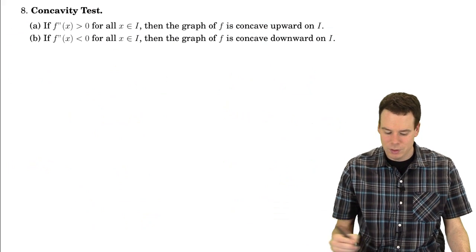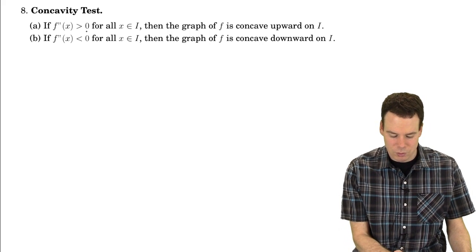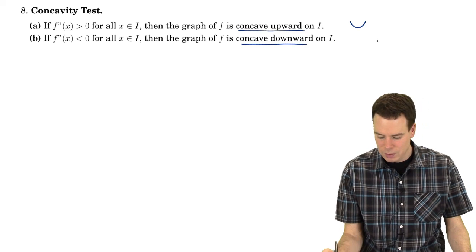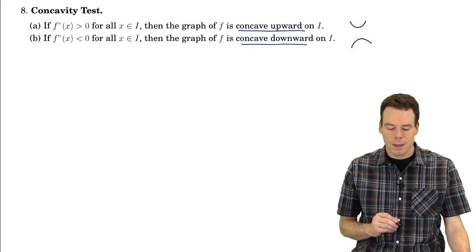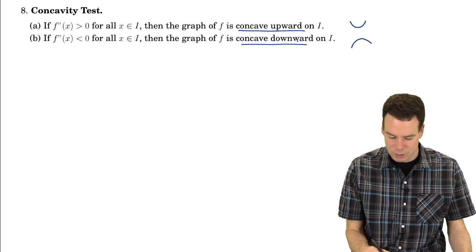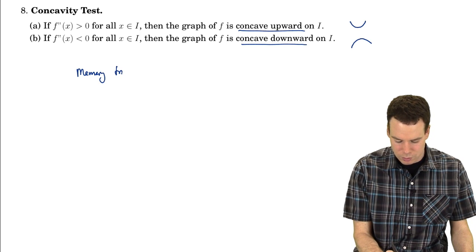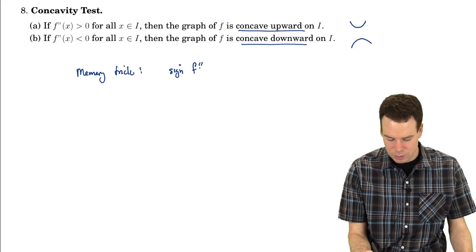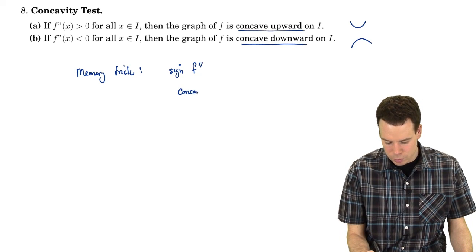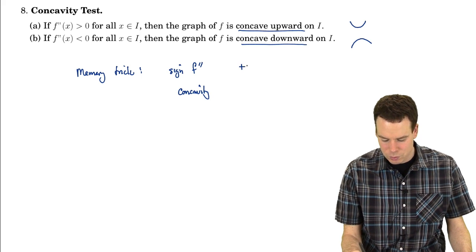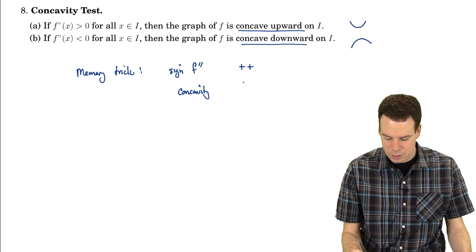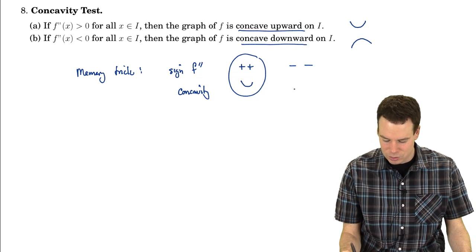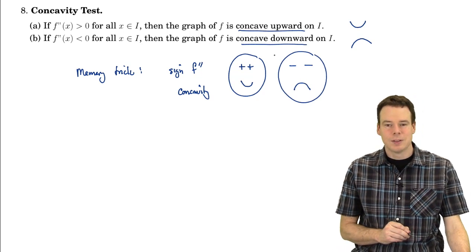This connection between the second derivative and concavity is summarized in the concavity test: if the second derivative is positive, the graph is concave up; if the second derivative is negative, it's concave down. There's a really nice memory trick: look at the sign of the second derivative. If it's positive, the curve makes a little smiley face — concave up. If it's negative, the curve makes a little frowny face — concave down. A really nice way to remember this connection.